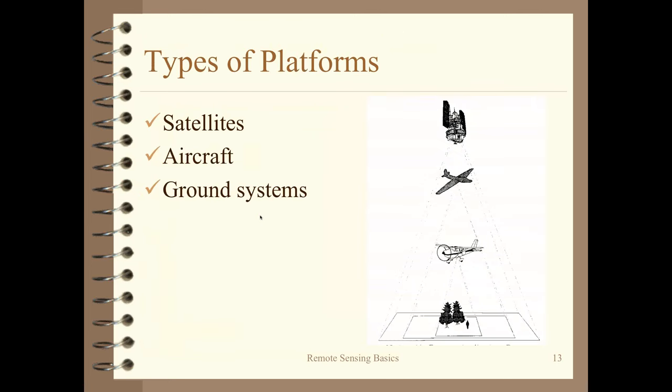Let's talk about platforms. There are all kinds: you can be very close to the object but still remote from it — a handheld camera a foot from tree needles is still remote sensing. A bucket truck above the canopy, a Cessna at 1,000 feet, a high-altitude airplane at 60,000 feet, the space shuttle orbiting 100 miles up, or satellites 300 to 600 miles above the Earth's surface.